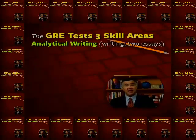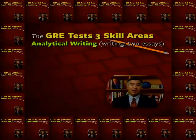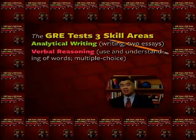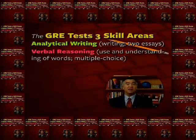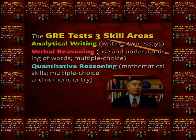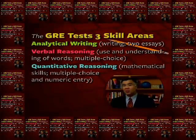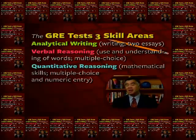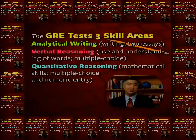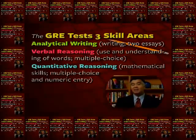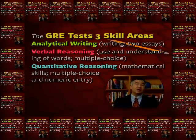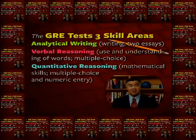The GRE exam tests three different skill areas: analytical writing, or writing; verbal reasoning, or the use and understanding of words; and quantitative reasoning, which is about mathematical skills. The verbal and quantitative reasoning parts of the GRE exam are based strictly on multiple choice or numeric entry questions — in other words, these are all short answer questions — while the analytical writing part of the exam actually requires you to write two essays, and we'll be giving you much more information about all this later.